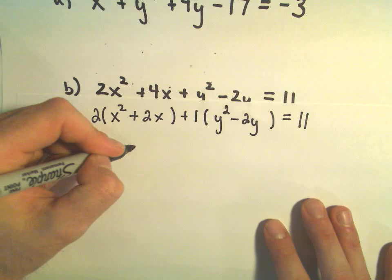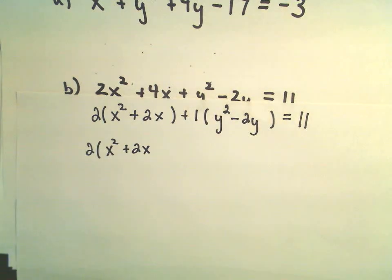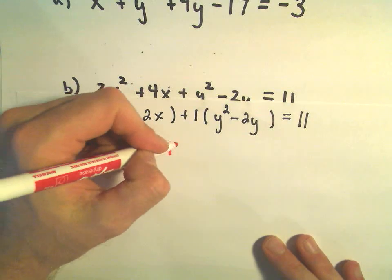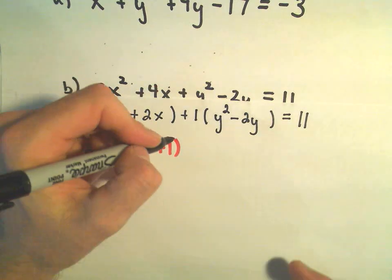So if we do our completing the square step, if we take 1 half of 2, we would get 1. 1 squared would be positive 1, so that's what I'm going to put inside the parentheses here.